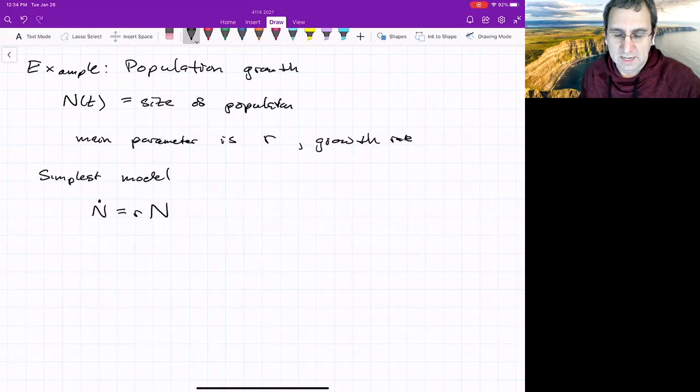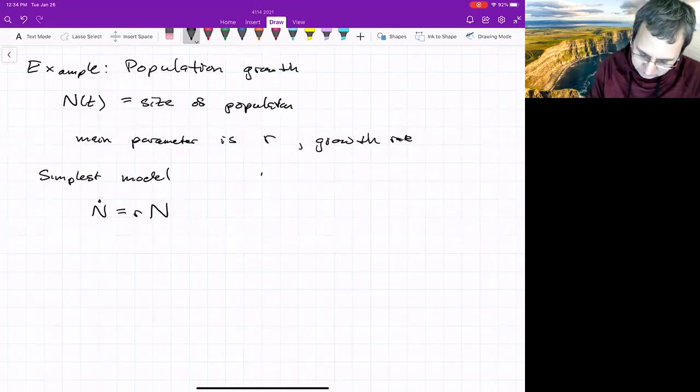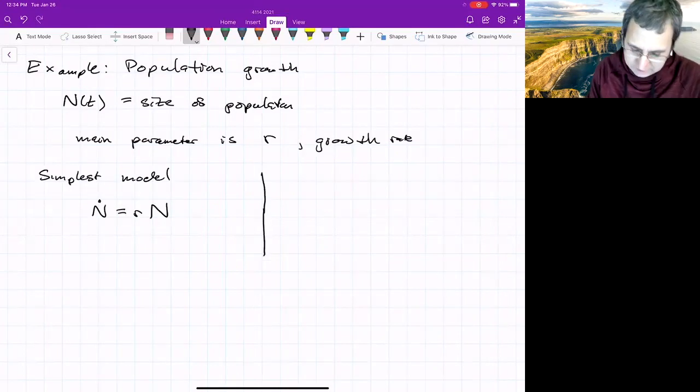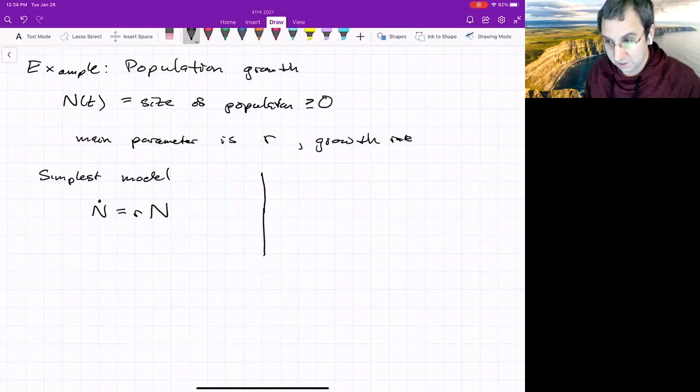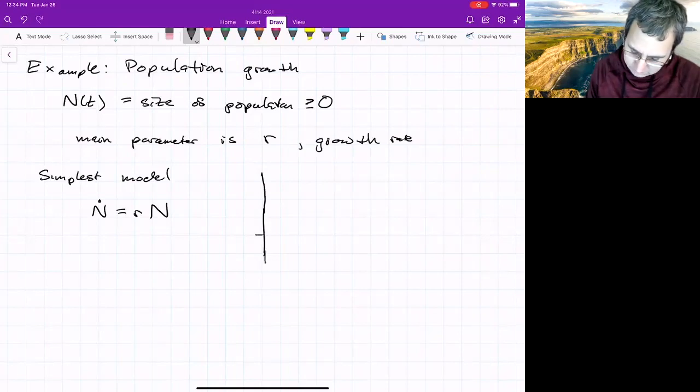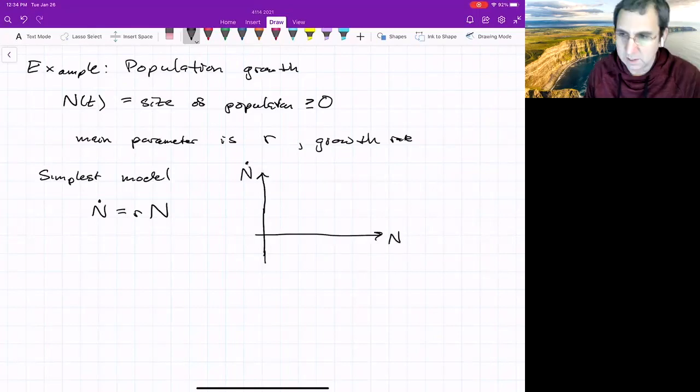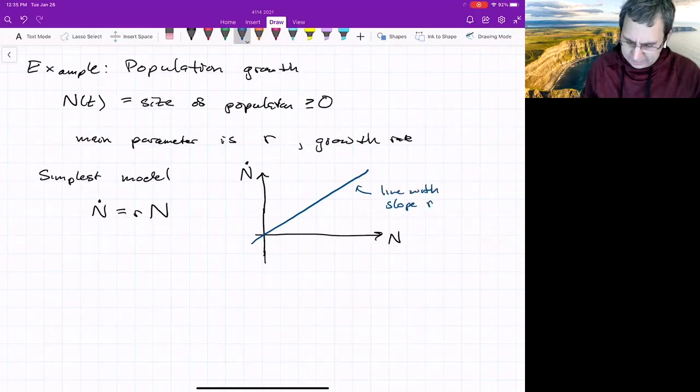The simplest model is just that the rate at which the population grows is proportional to the size of the population. So the simplest model would be that N dot, the rate of growth of N is R times N. The constant of proportionality is this growth rate. So we could just plot this, and because we're talking about the size of a population, this is greater than or equal to zero. You can't have negative populations.